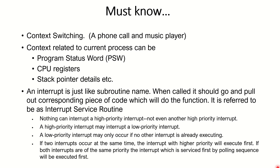High priority interrupts can never be blocked. For instance, if someone at a higher level is asking me a question, I cannot tell them to wait. But if I'm talking to someone at my level or lower, and another person comes, I can tell that person to wait. Some interrupts are stoppable — these are lower priority interrupts — and some cannot be stopped — these are high priority interrupts.